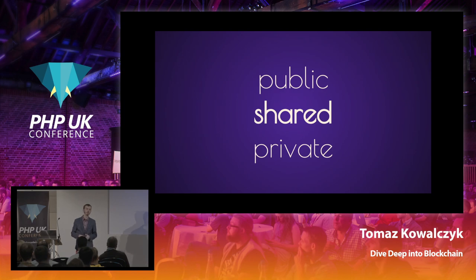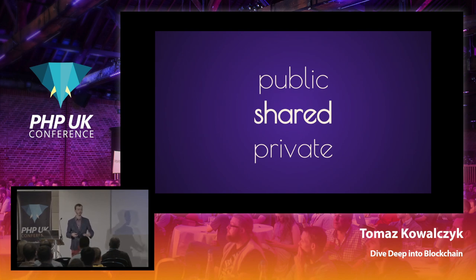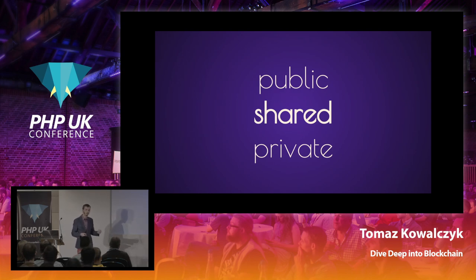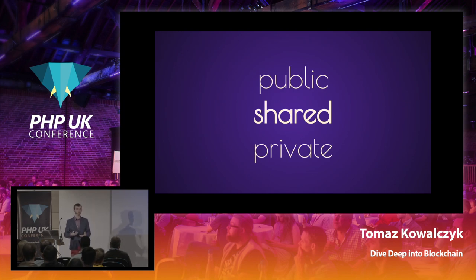Things get interesting when you consider the middle ground between public and private: the shared blockchain, in which you want to interact with other entities you may not control, but who still want to do business with you. For example, you are an e-commerce store and you want to use blockchain to control interactions with other e-commerce stores that sign an additional agreement. You can build a blockchain to track the information exchanged, with rules in the code deciding what kind of information each party has access to.